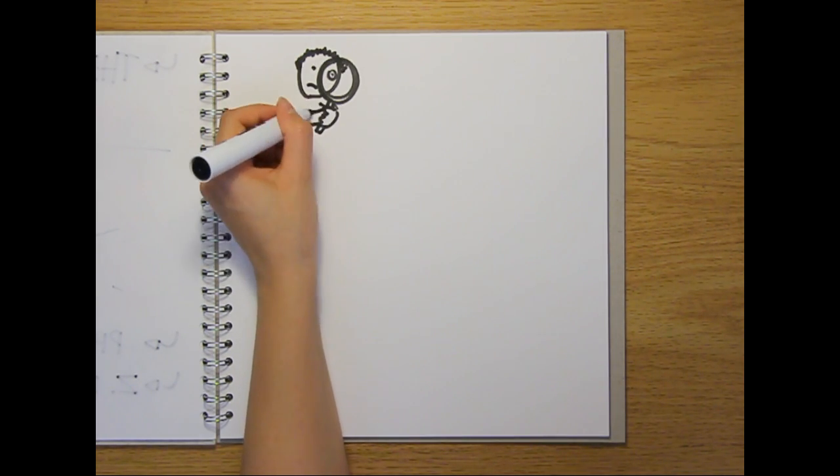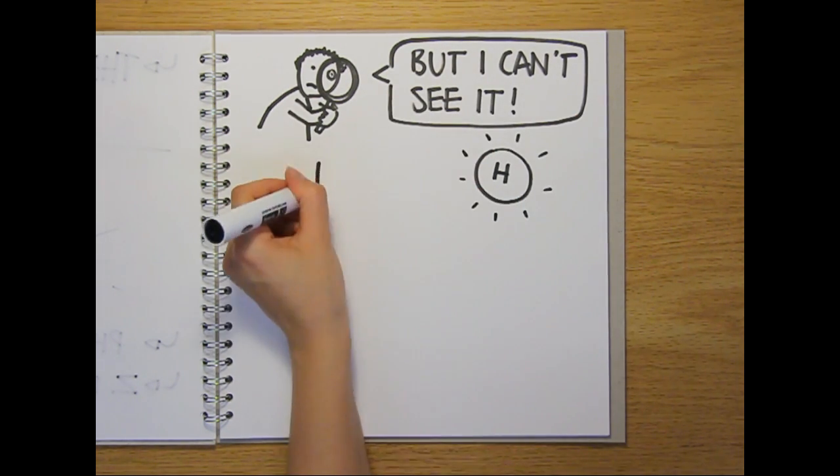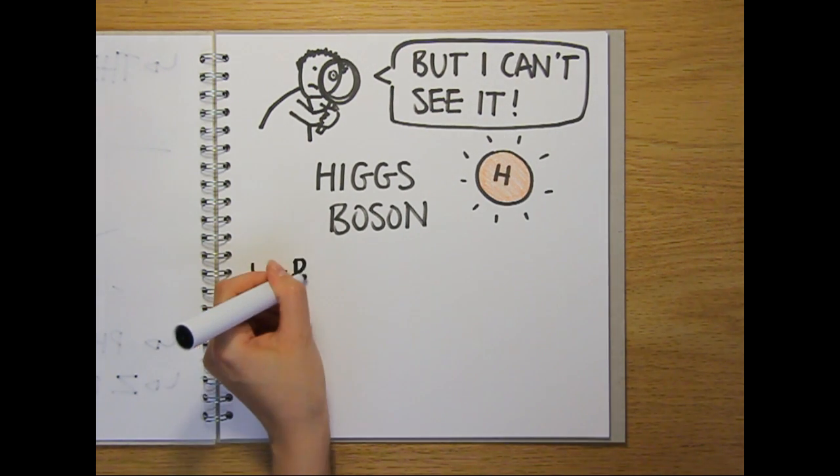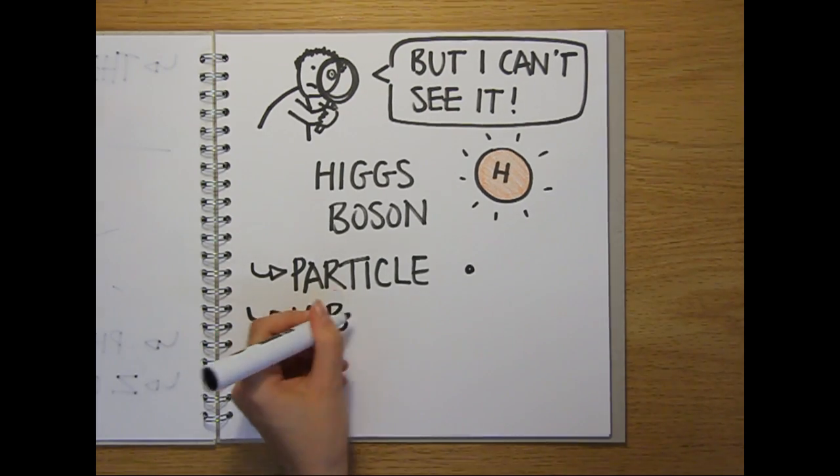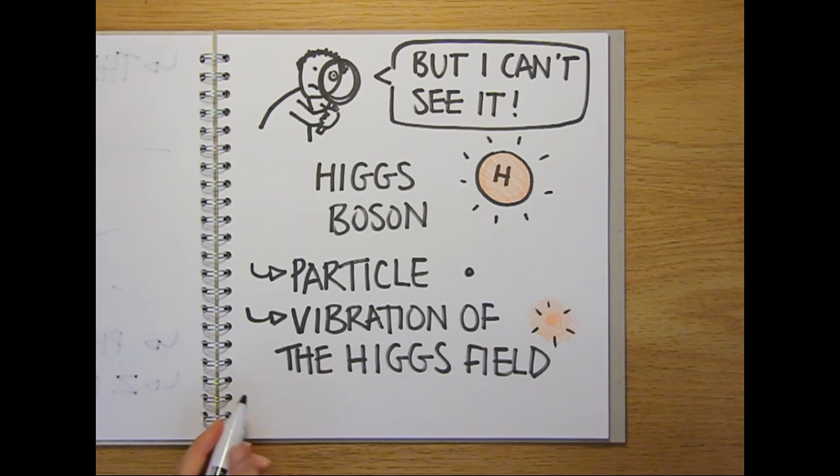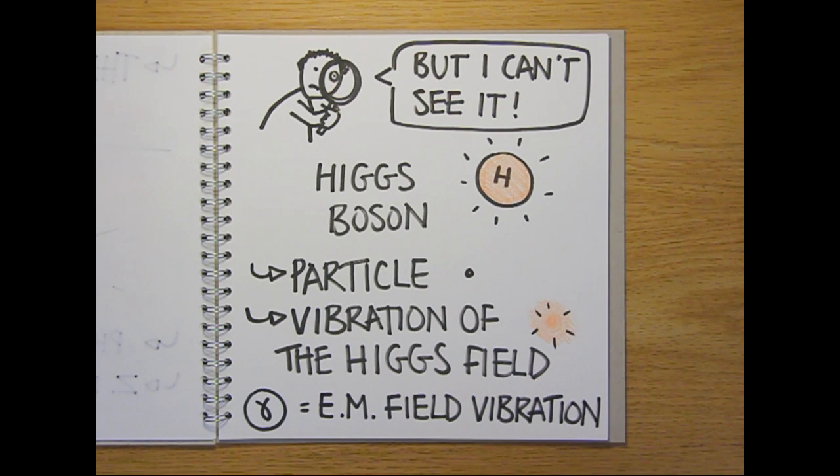But if the Higgs field is invisible, how can we study it? Enter the Higgs particle, which is another type of boson. Although we call it a particle, the Higgs boson isn't just a blob of stuff in space. It's actually a vibration of the Higgs field that we can detect. And in fact, we can think of all the fundamental particles this way, so a photon of light can be thought of as a vibration of the electromagnetic field.